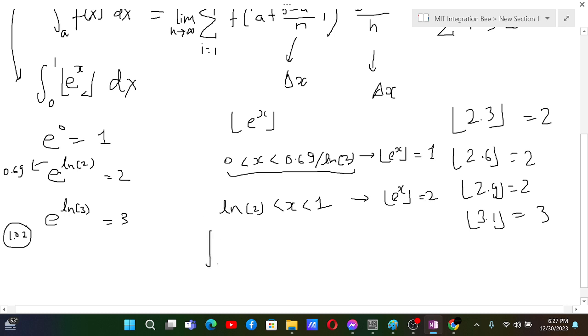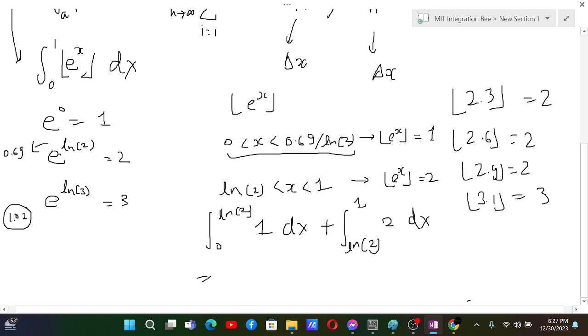Okay, so now since we know this fact, we can basically write like this: integral from 0 to 1, so 0 to ln of 2, and in this range of values, GIF of e to the power x is actually 1, so 1 dx. Now going from ln 2 to 1, in this range the value is going to be 2, 2 dx.